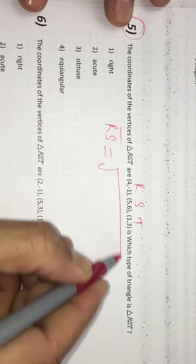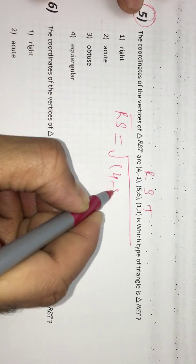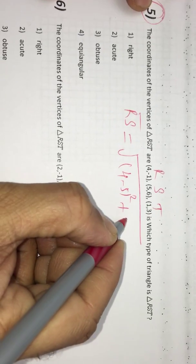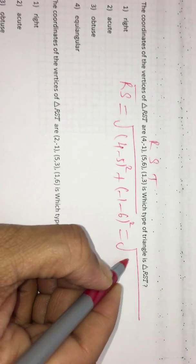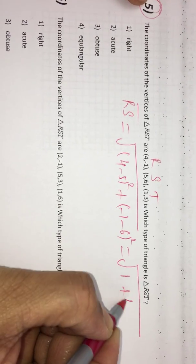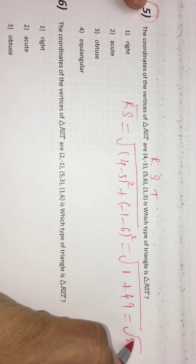RS is using distance formula: 4 minus 5 whole square and then negative 1 minus 6 whole square. Then we get negative 1 square which is positive 1, negative 7 square which is positive 49. I get root 50.